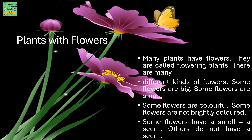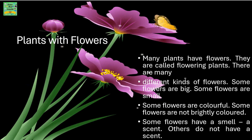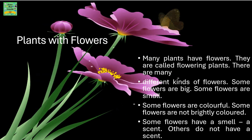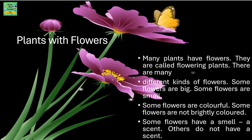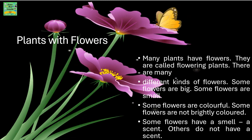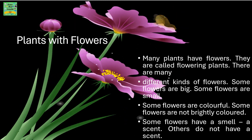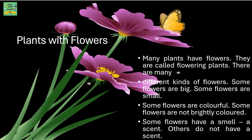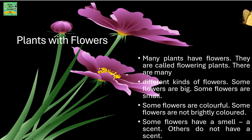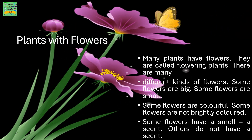Many plants have flowers and can be called flowering plants, while some plants do not have flowers and are called non-flowering plants. There are many different kinds of flowers — some are big and some are very small. Some flowers are colorful while some are not brightly colored. Some flowers have a scent while others do not.